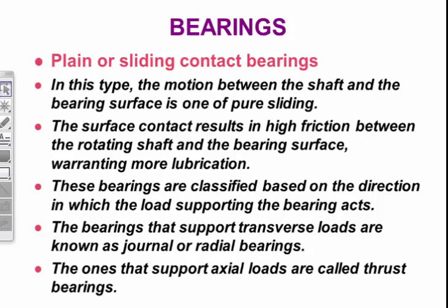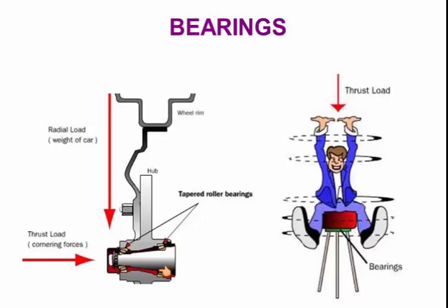Bearings are classified by what they do: they either have a shaft rotating in them, a shaft moving in and out, or they stop the shaft moving in and out — think of the front wheel bearings on a motor car. You have journal or radial bearings — journal bearings being what we typically call a car engine bearing. There are also axial bearings, where the axis tries to move horizontally. As you turn a wheel, the force tries to pull the wheel off or push it on due to cornering forces, so tapered bearings are designed to prevent this movement in both directions.